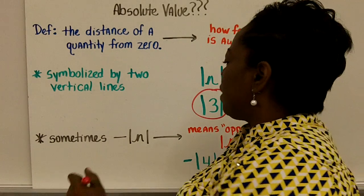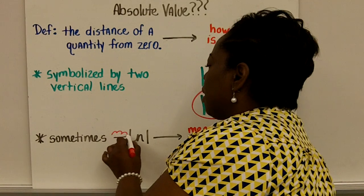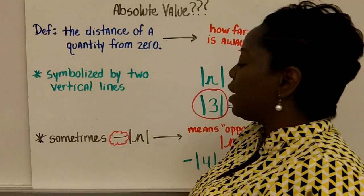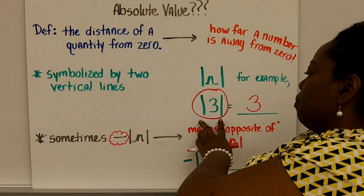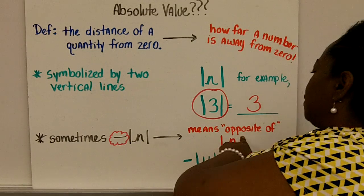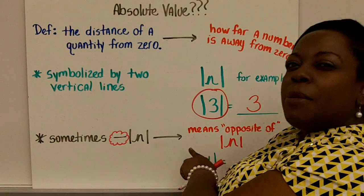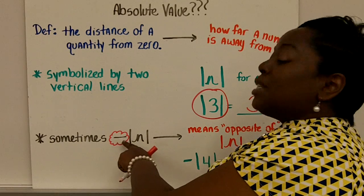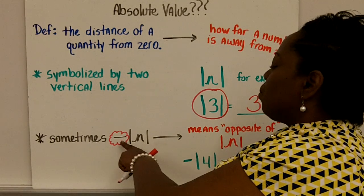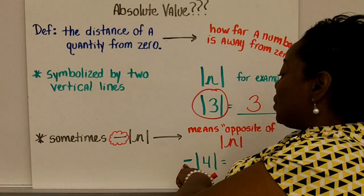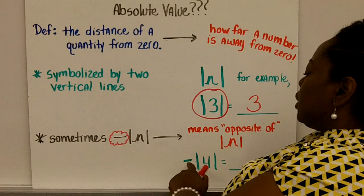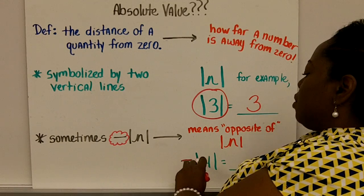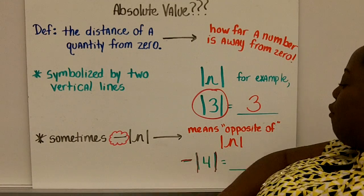Now, sometimes they may put what you may consider or used to calling the negative sign in front of the absolute value notation. Basically, that negative sign just means opposite of, and we talked about that earlier. Negative means opposite of. So they're asking you what is the opposite of the absolute value of four. So again, the opposite of the absolute value of four.